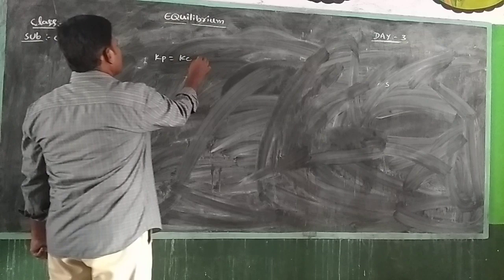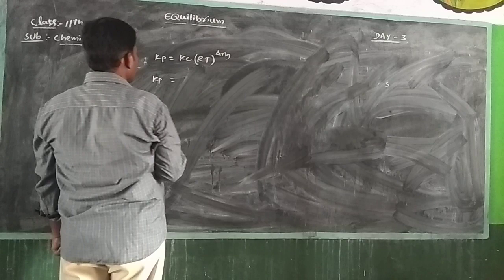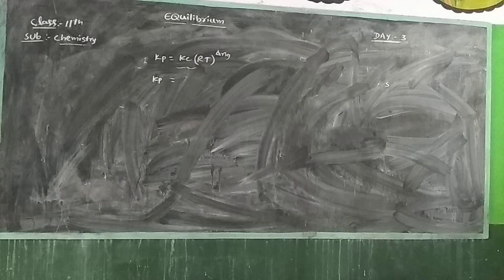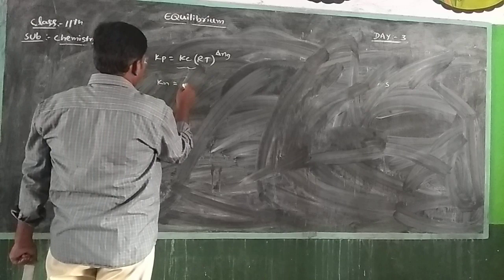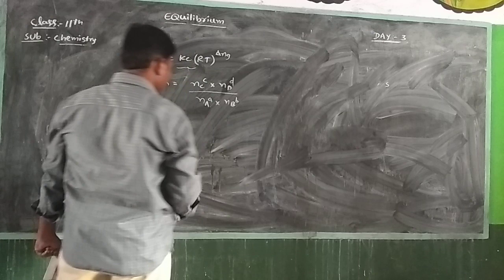Kp is equal to Kc·(RT)^ΔNg. Kc is defined in terms of the equilibrium constant as: number of moles of C power c, number of moles of D power d, divided by number of moles of A power a, number of moles of B power b.